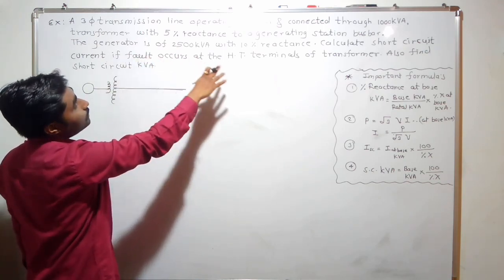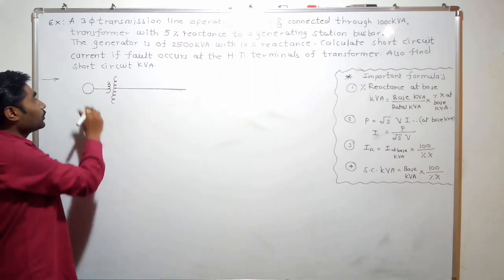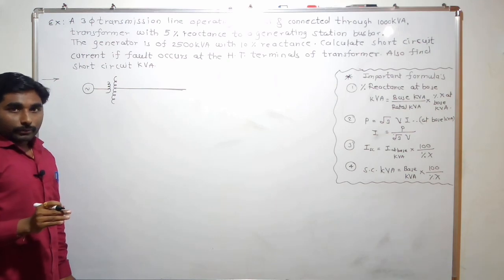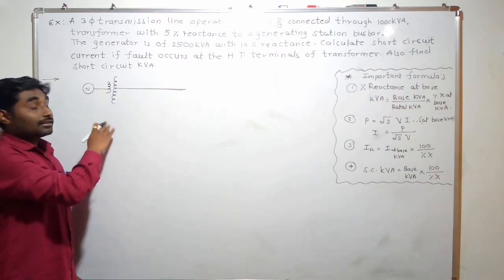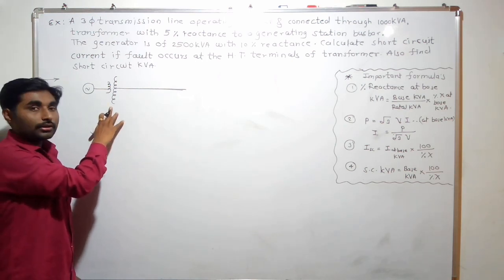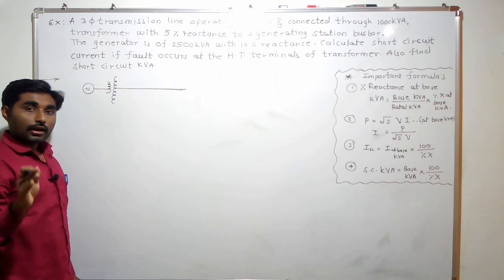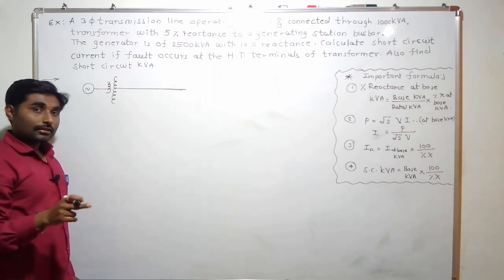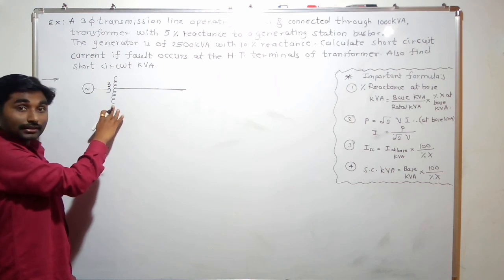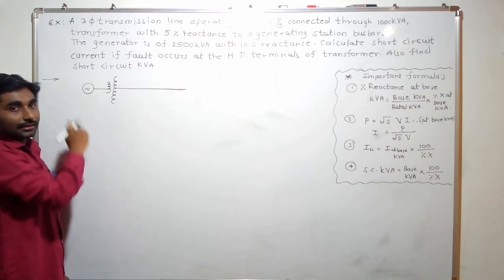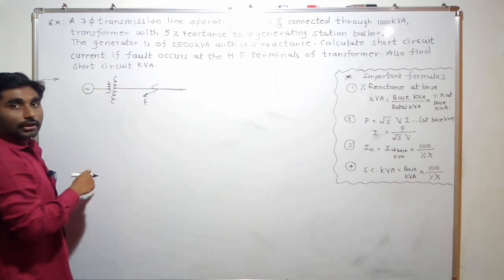The fault occurs at the HT terminals of the transformer. One thing that we have to remember: the HT terminal of a transformer at a generating station is the secondary winding of the transformer. The transformer at a generating station is always a step-up transformer, meaning the voltage at the secondary terminal is greater than at the primary. So the secondary of the transformer is the HT terminal and the primary is the LT terminal. The fault occurs at the HT terminal.